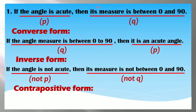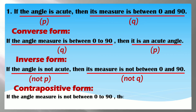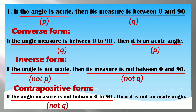And then kapag contrapositive form, itong inverse — pagbabaliktarin lang natin si P at si Q. Magiging: if the angle measure is not between 0 and 90, then it is not an acute angle — not Q, not P. Kailangan yung statement ninyo ay nandun pa rin yung thought, so yung 'not' na word kailangan ilagay ninyo sa tamang posisyon.